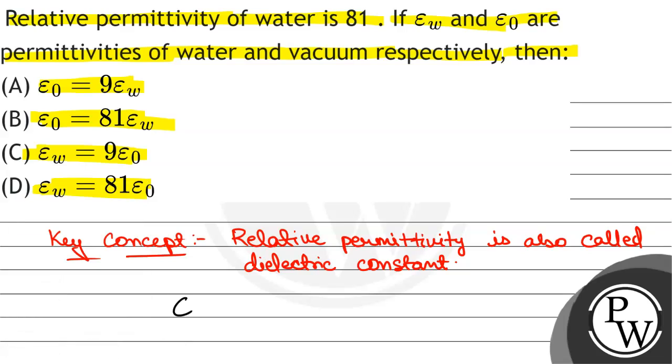Relative permittivity is equal to epsilon water divided by epsilon naught. That will be equal to epsilon water by epsilon naught. Therefore, epsilon water will be equal to 81 times epsilon naught.